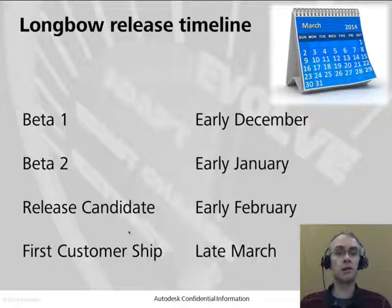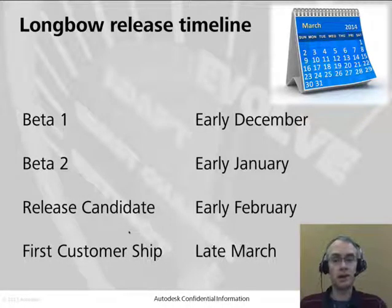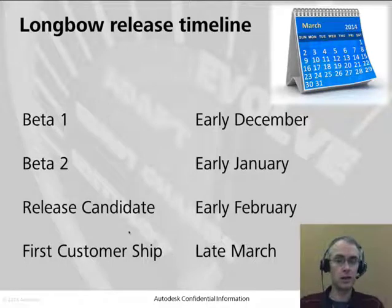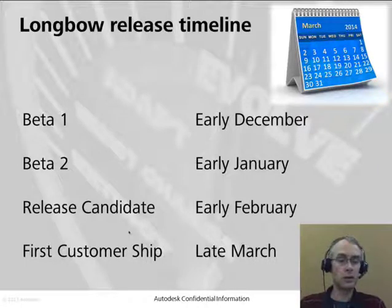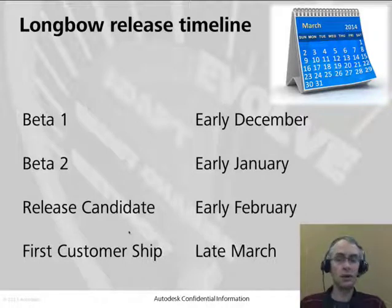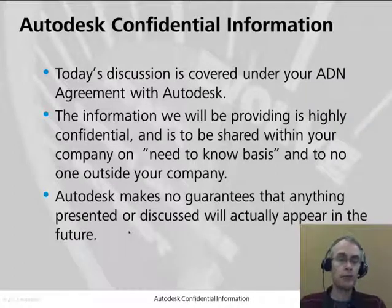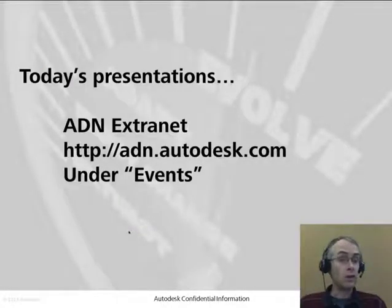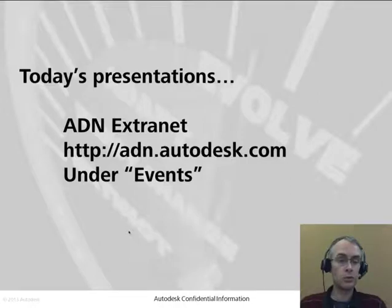Finally, a quick look at the timeline. Beta 1 is already available on the ADN Extranet, released in early December. Beta 2 should be available within the next week or so. A release candidate should be available in February, and the first customer ship will be in late March as usual. If you have apps on the Exchange Store, please migrate as soon as possible to take advantage of the new product launch to advertise your application to new customers. Reminder: this is confidential information — please don't share it outside of your company. The presentation and this recording are on the ADN Extranet under the Events section. Thank you very much for listening and good luck with your application migration.